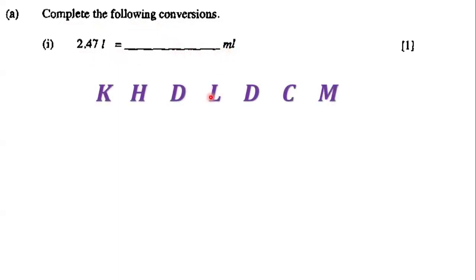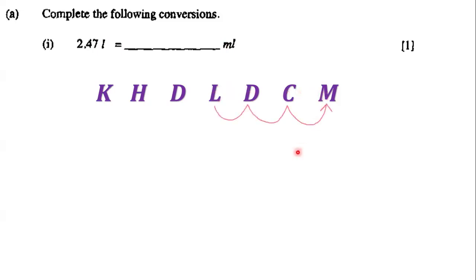In order to do this we're going to use this useful acronym which states: 'Knock Him Down Larry, Don't Commit Murder.' The K is for kiloliters, the L is for liters, and the M is for milliliters. Our goal is to convert liters to milliliters, so we go from L to M, which means we move over three places.